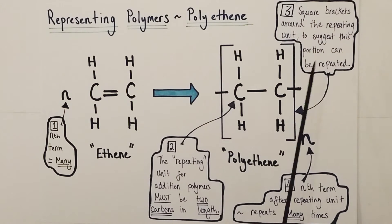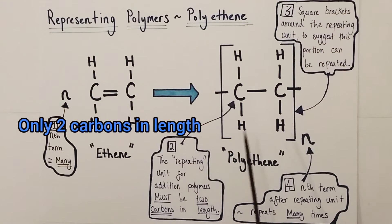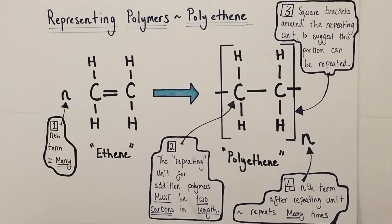To represent that continuation of the chain again and again in both directions around this central point, there are some key features to the repeating unit which I'm going to talk about now. The first feature of the repeating unit is that it must be only two carbons in length in your diagram as shown here for this polyethene polymer.